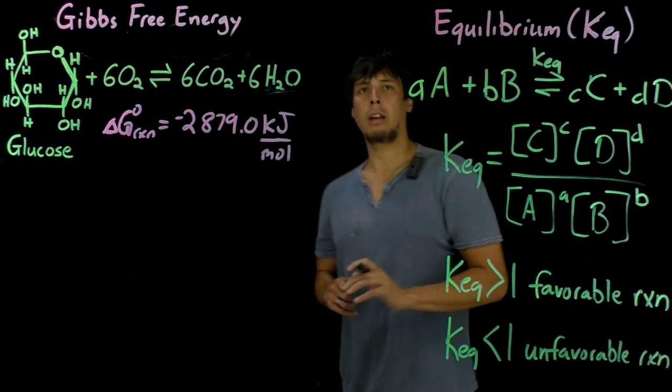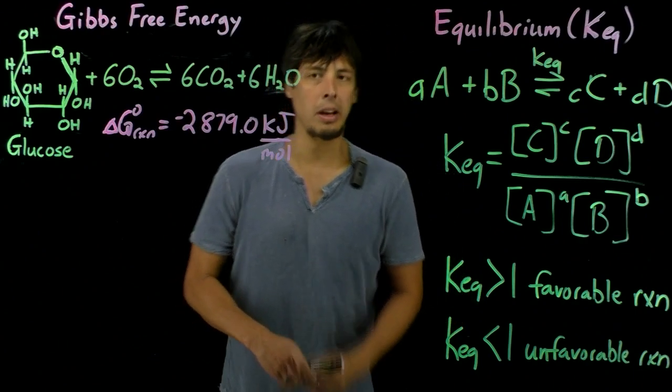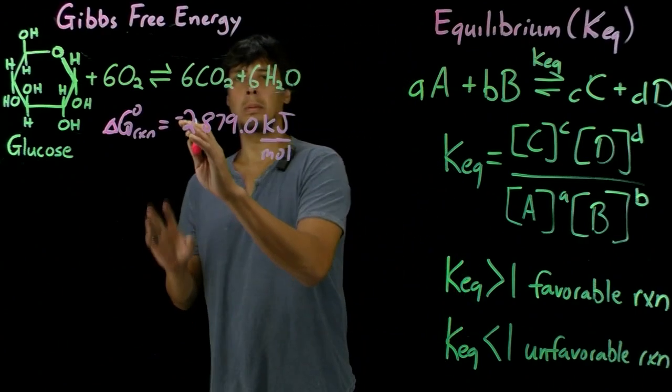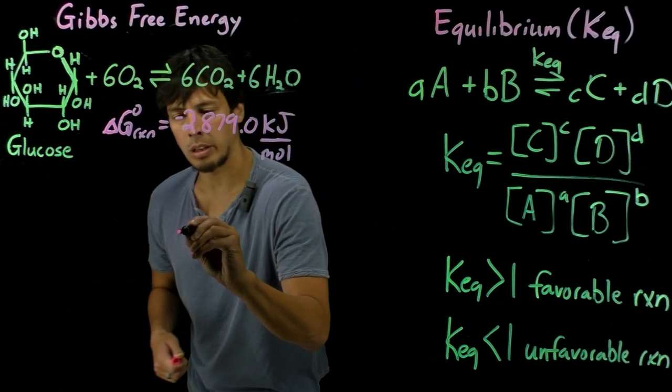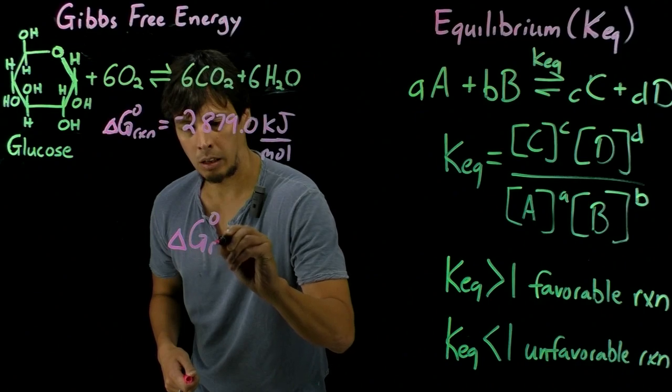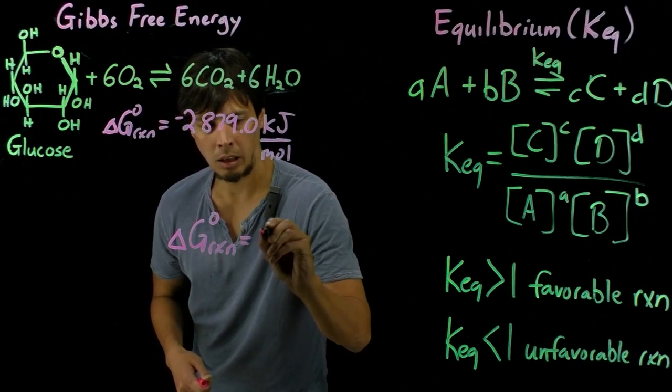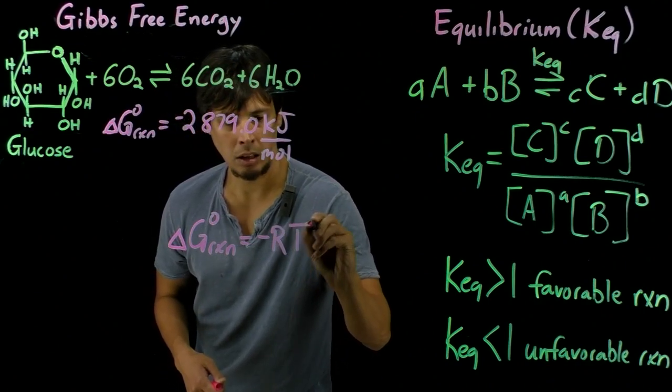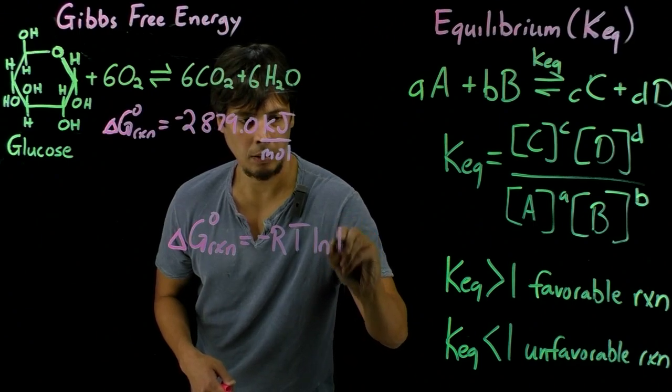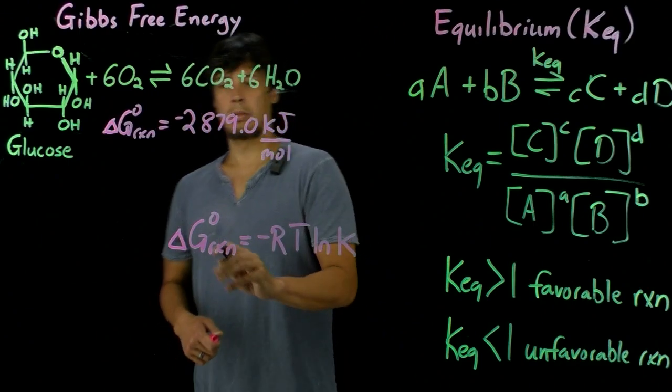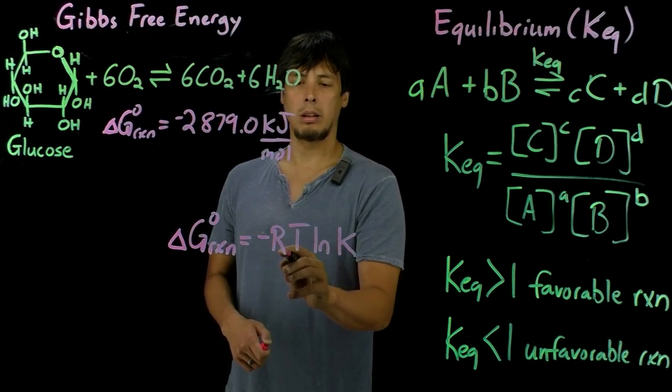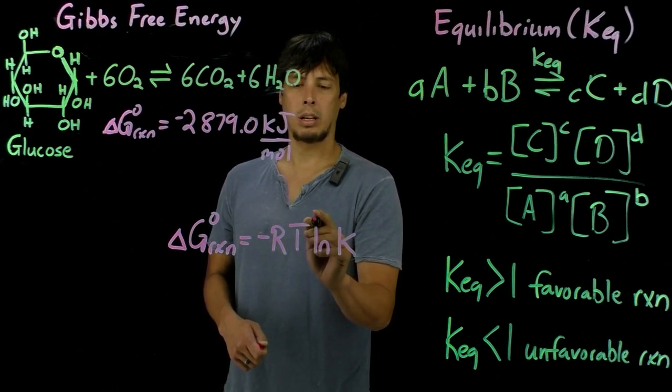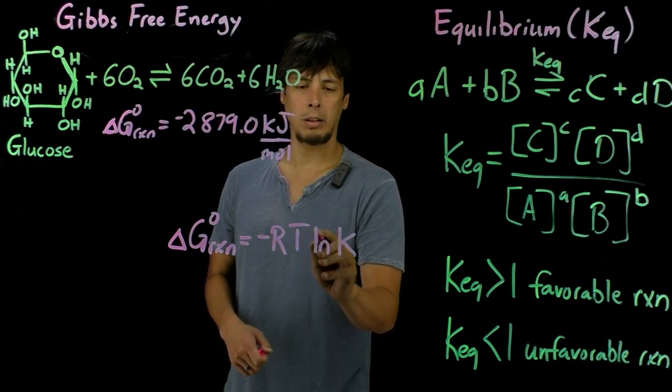And so we have a mathematical relationship between the Gibbs free energy and equilibrium. And that's written like this, where we have the change in the Gibbs free energy, R is the universal gas constant, T is the temperature in Kelvin,